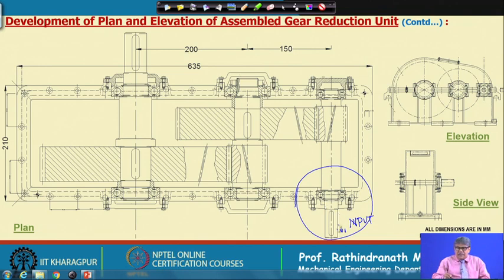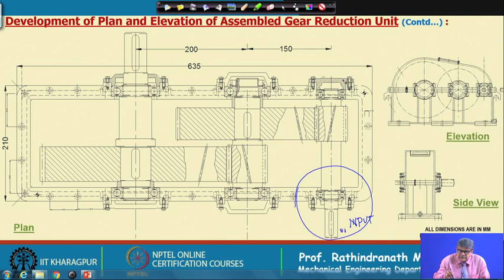On the input shaft, we have put the cover and oil seal, already shown in the previous lecture. On the other side of the input shaft, the cover is there but it is completely blind because the shaft does not extend on that side — input is from one side only. So we need not make any hole and no oil seal is required; we simply put a cover.